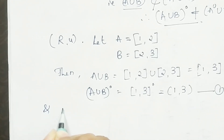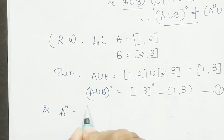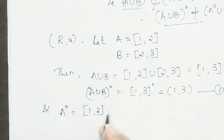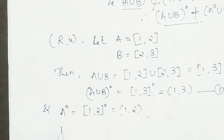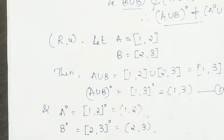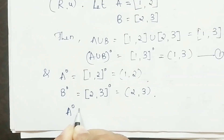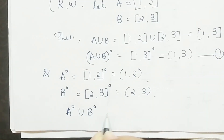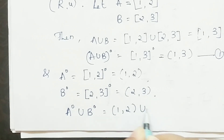Now let us find the value of Int(A). The interior of A, which is the closed interval [1, 2], is the open interval (1, 2). Similarly, the interior of B, which is the closed interval [2, 3], is the open interval (2, 3). So Int(A) ∪ Int(B) equals the open interval (1, 2) union the open interval (2, 3).